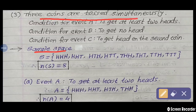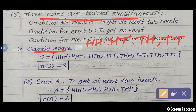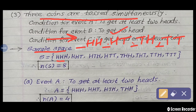We know how to write the sample space when we toss two coins: H-H, H-T, T-H, and T-T. When we toss three coins simultaneously, a very simple method is used. At the underlined first position, write H — so the first sample point is H-H-H, second is H-H-T, third is H-T-H, and fourth is H-T-T.